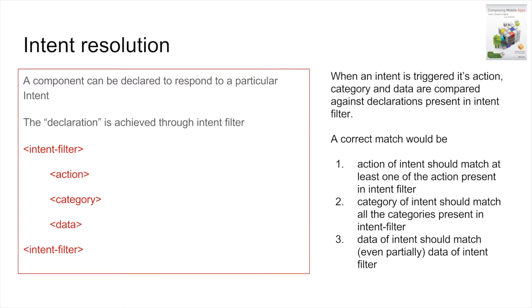Let us now understand what intent filter actually means. Any component that needs to be triggered through the implicit intent has to declare certain attributes on which it wants to respond. This is done through the intent filter tag. When declaring an activity, service, or broadcast receiver in the manifest file, I will write an intent filter tag, which contains three further attributes: action, category, and data.